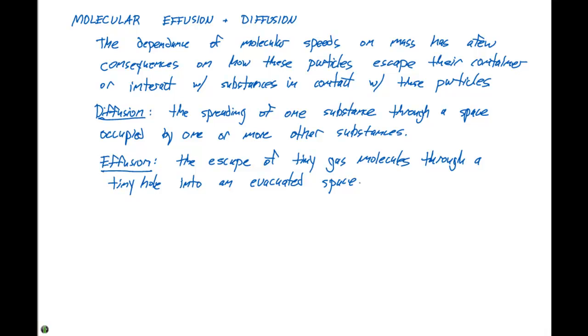We have the definitions of these, so how can we work these together with the root mean square speed? In 1846, Thomas Graham discovered the effusion rate of a gas is inversely proportional to the square root of its molar mass.